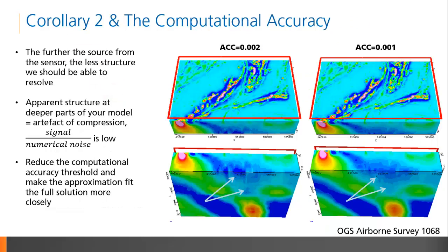Our second corollary was that the farther the source from the sensor, the less structure we should be able to resolve. Therefore, we should expect some degree of smoothness in the deeper parts of our model. The numerical noise in deep parts of the model can sometimes manifest in apparent structure. The interpreter should be cautioned against placing any importance in these erroneous inversion details. You can reduce the computational accuracy threshold in VOXI to make the approximation fit the full solution more closely, which reduces the numerical noise, as seen in this example.